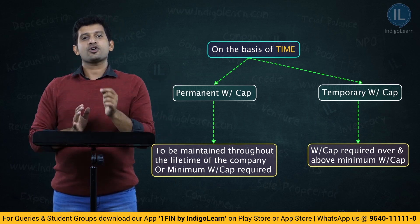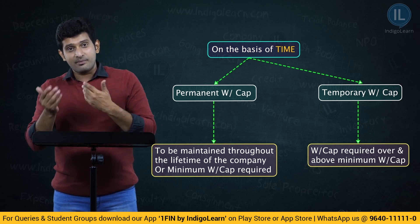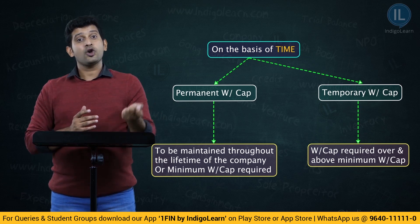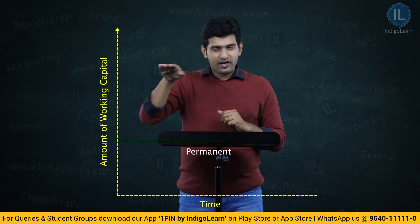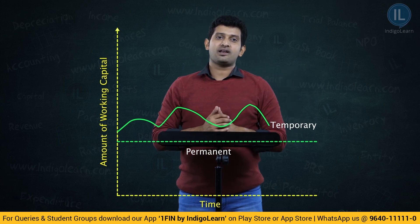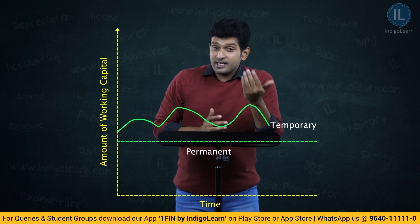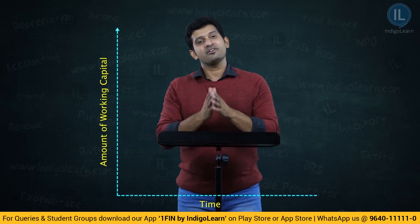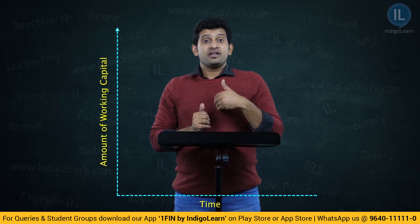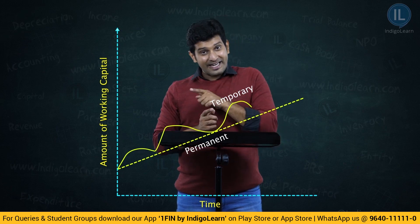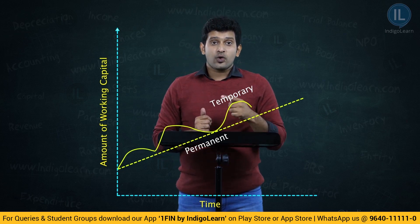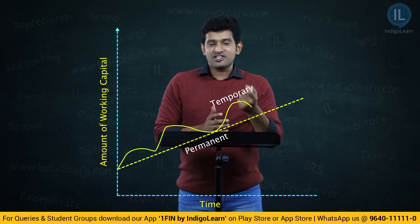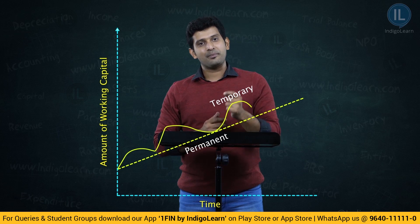At any point of time you require the same amount — that is permanent working capital. But situationally, based on time or demand and supply, if there is a requirement of additional working capital over and above the permanent working capital, such working capital is called temporary working capital. If you observe in a graphical format, for a stable company permanent working capital will be a flat horizontal line, and the curved lines over and above indicate temporary working capital. For a growing company, the permanent working capital will be an inclined straight line as it increases with growth, and whatever working capital is required over and above this inclined line based on the situation is called temporary working capital.